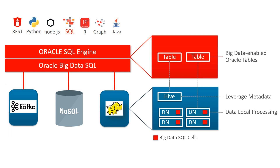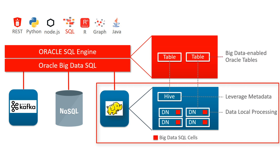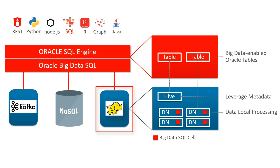Big Data SQL accesses files in HDFS directly or by leveraging metadata captured in Hive. You can access most any file type including text, JSON, Avro, Parquet, and so on — any source that offers Java classes for parsing that data.